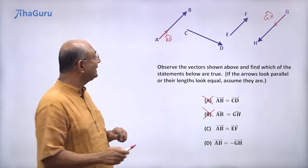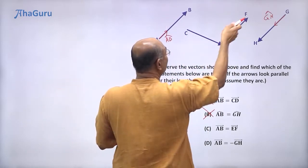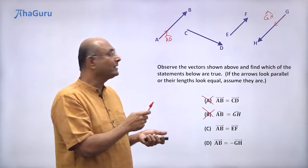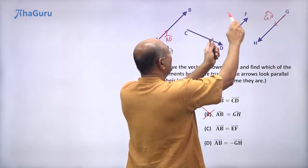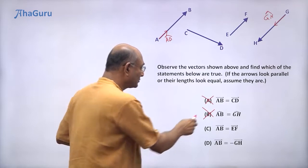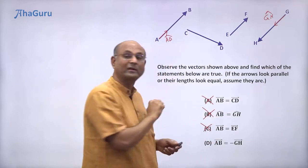AB vector is equal to EF vector. No, because the length of AB and the length of EF are not the same. So that means the vectors are not equal.